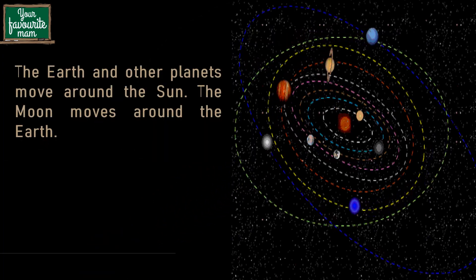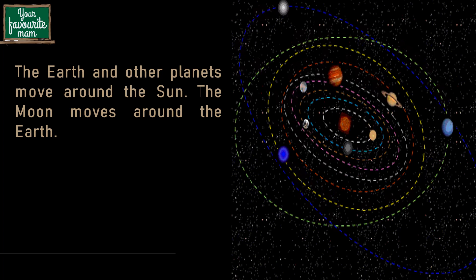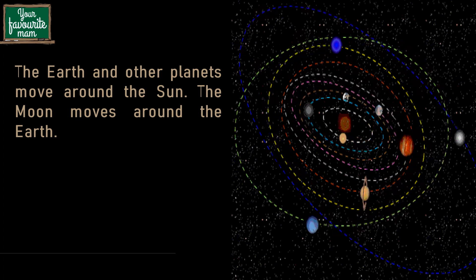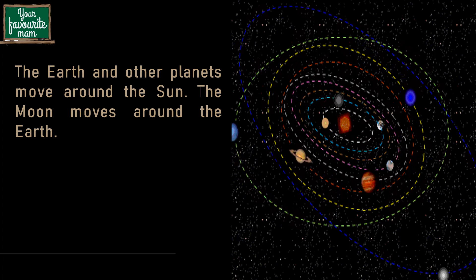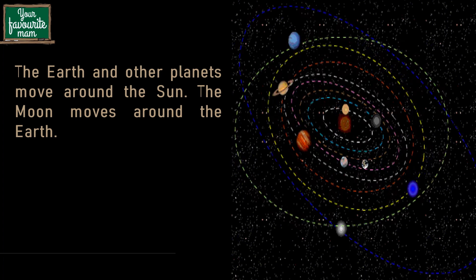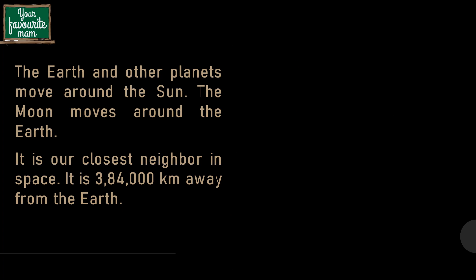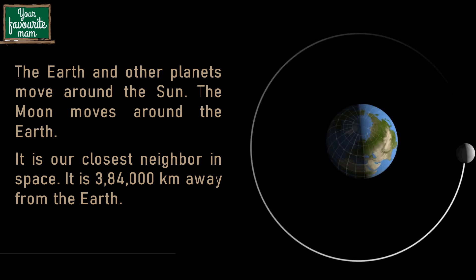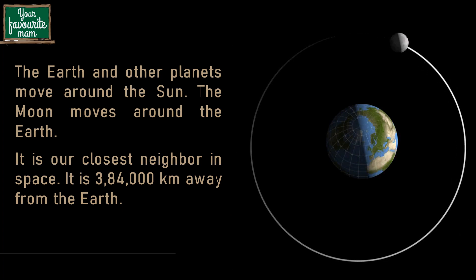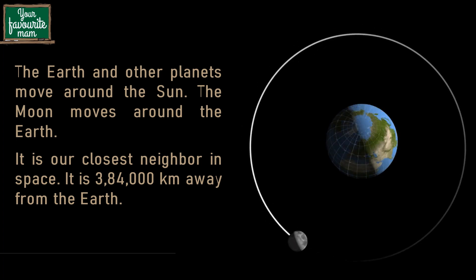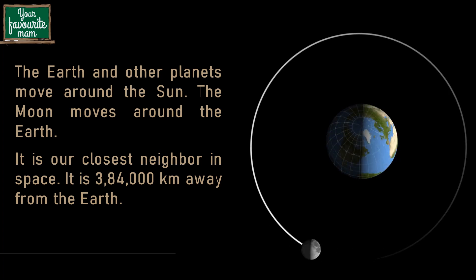As we know, there are 8 planets in our solar system. Earth is the third planet from the sun, and it along with 7 other planets moves around the sun. Similarly, the moon also moves around the earth. It is our closest neighbour in space, at 384,000 km away from the earth.